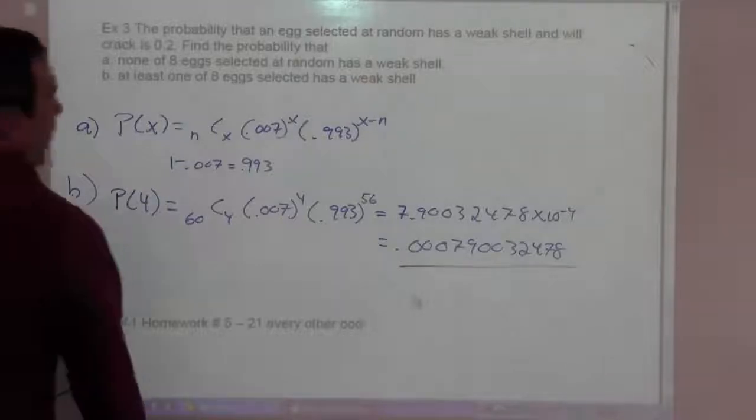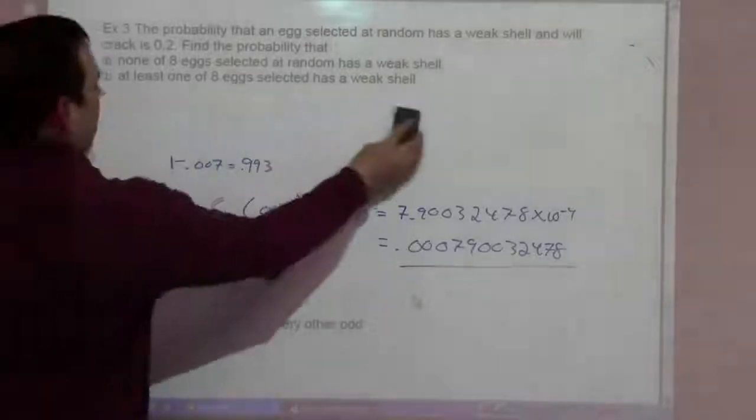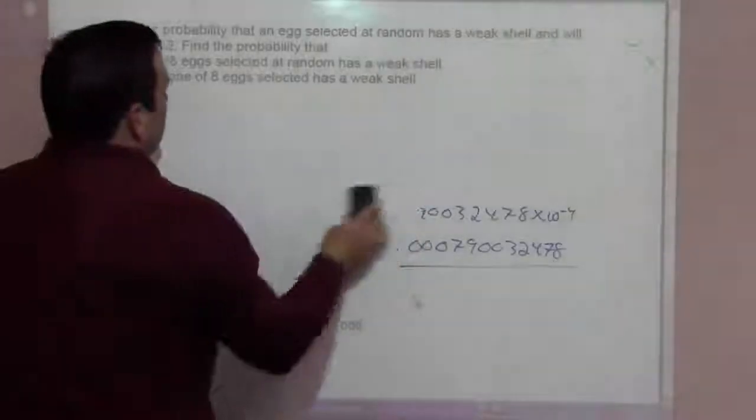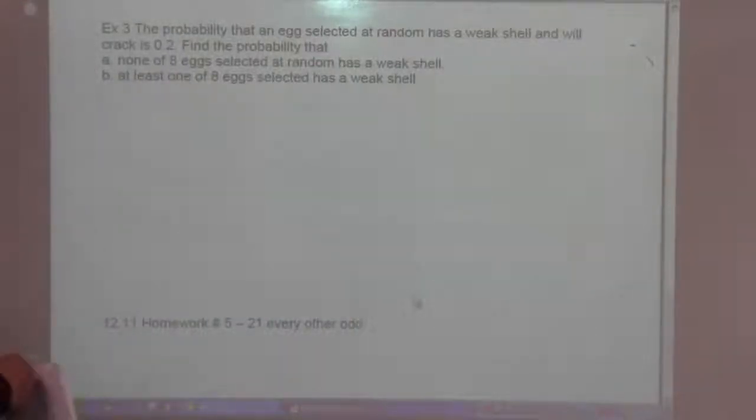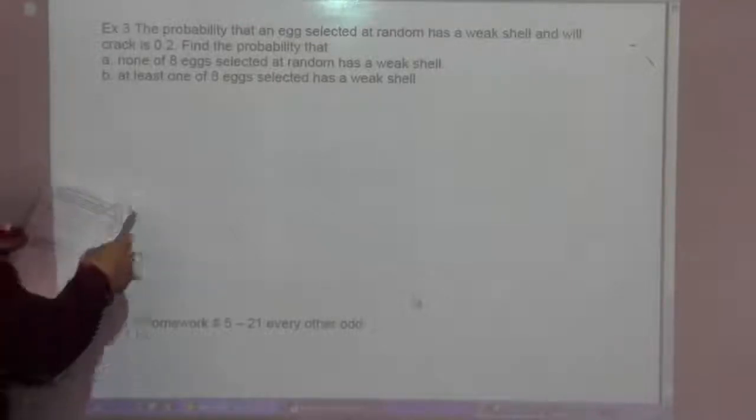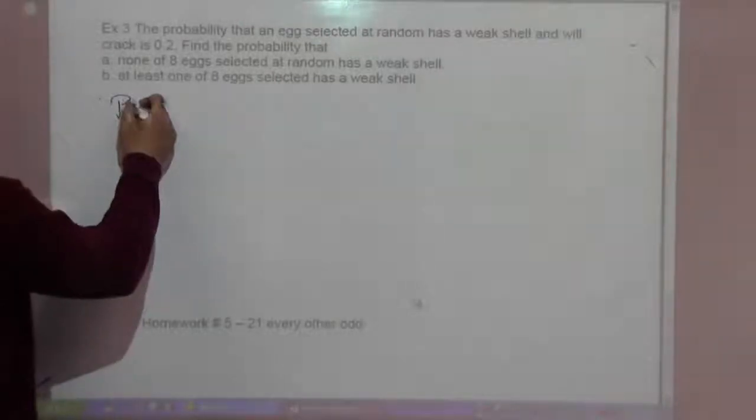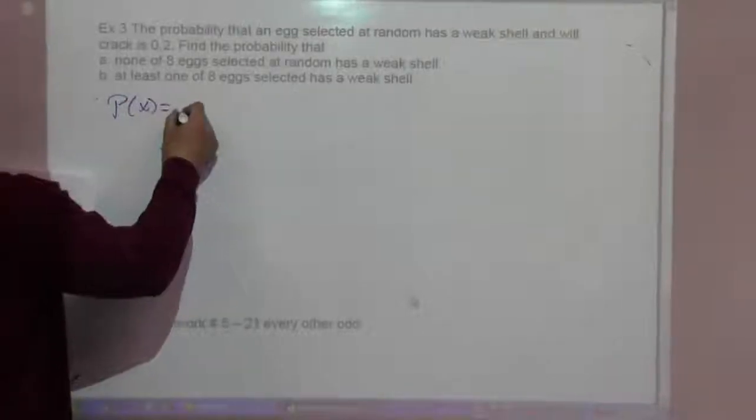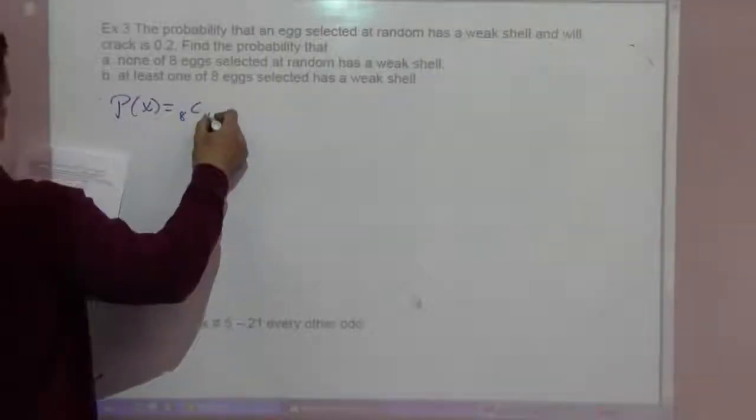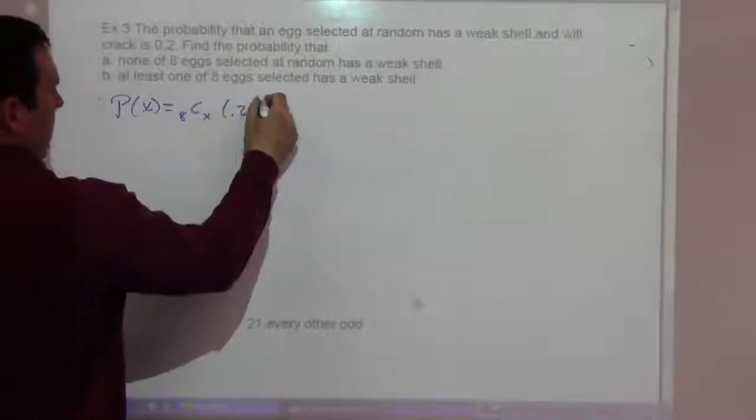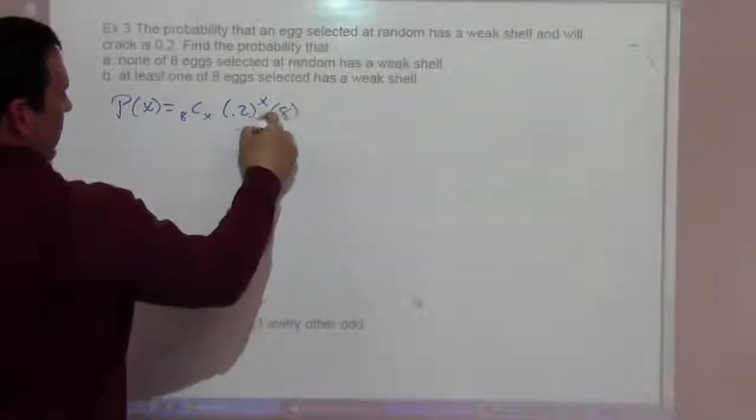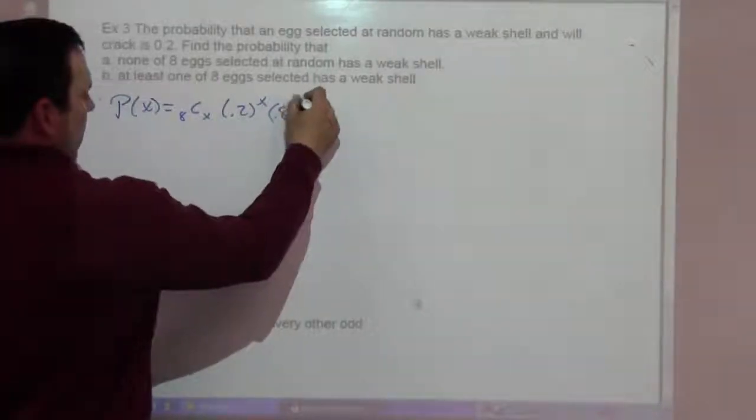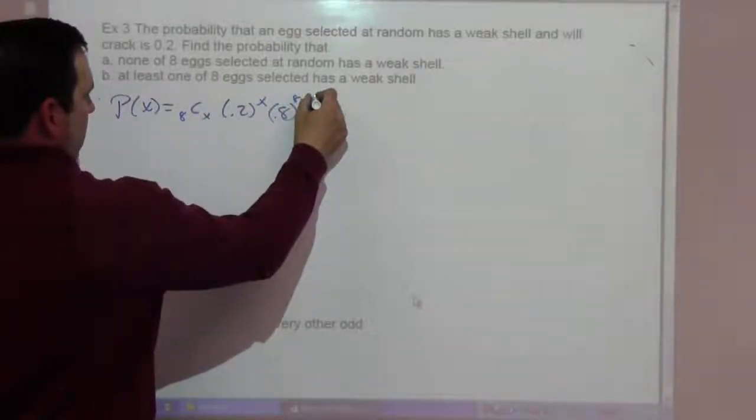Example 3: Find the probability that an egg selected at random has a weak shell and will crack. The probability is .2 that it will crack. Find the probability that none of eight eggs selected at random has a weak shell. So P of x is 8 choose x times .2 to the x times .8 to the 8 minus x.